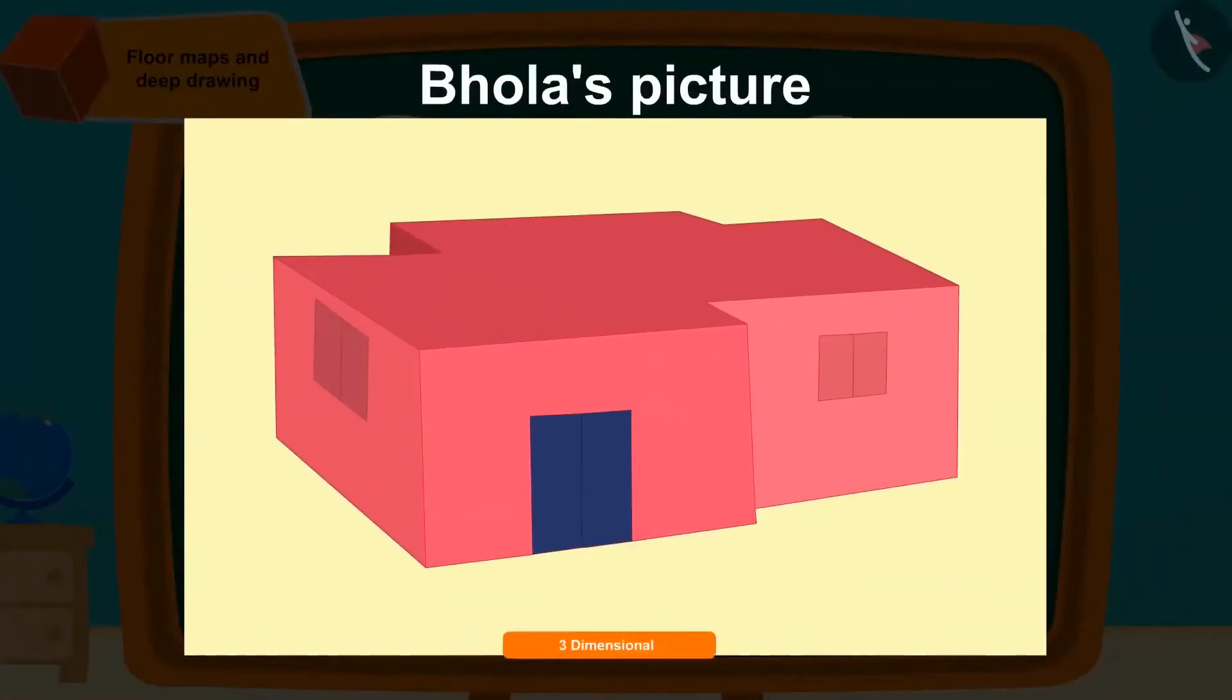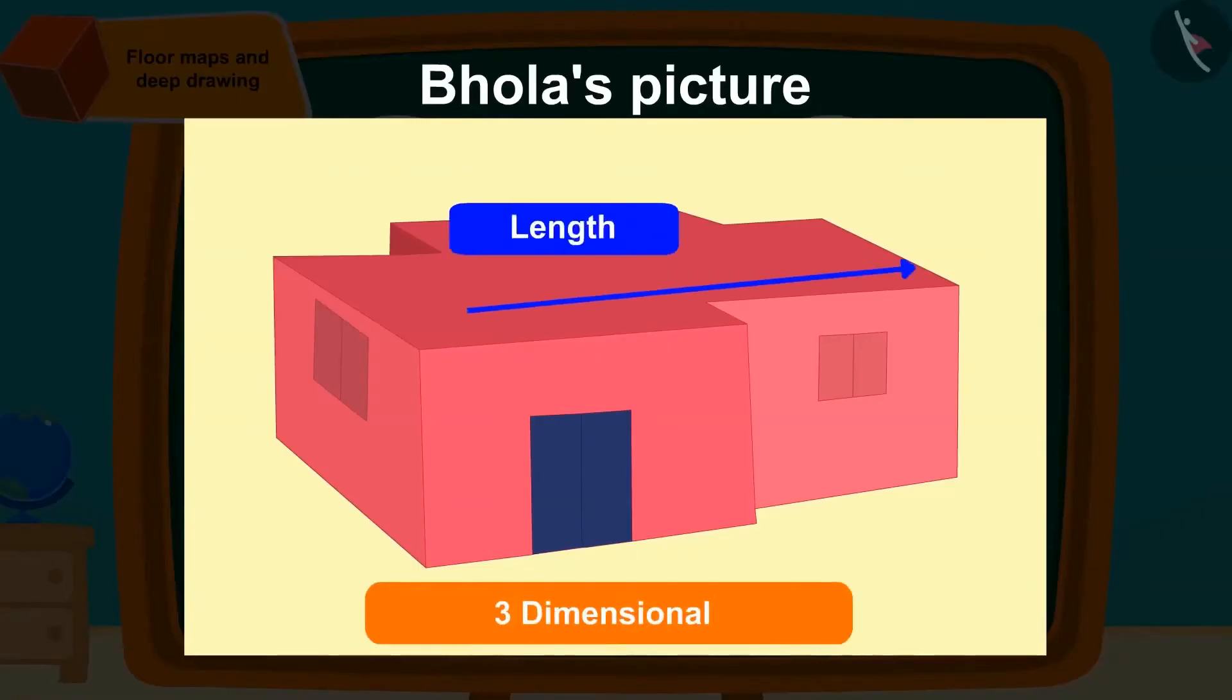That's why we cannot tell about the height of the room or the window. This portrait is depicting all three dimensions. In this we can also see the length, breadth, and depth of the room, and that's how we can tell about the height of the room or window from the picture that Bholla made. Since we can also estimate the depth, we call the pictures drawn by Bholla as deep drawings.